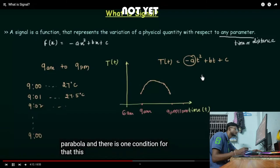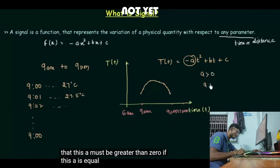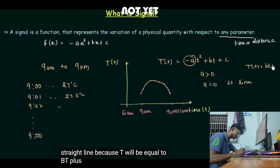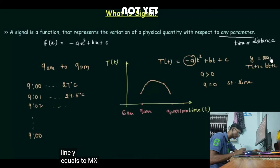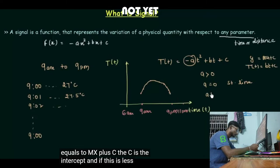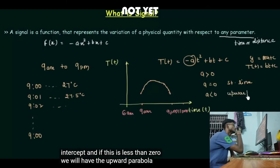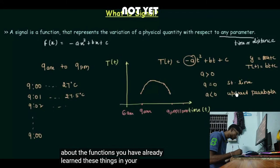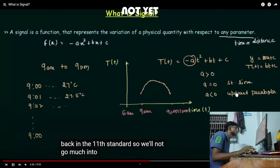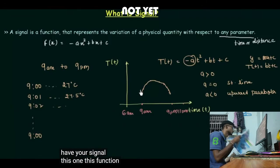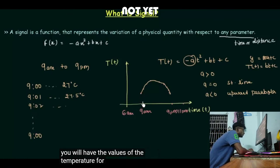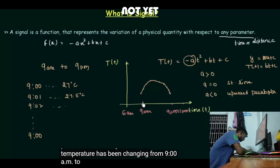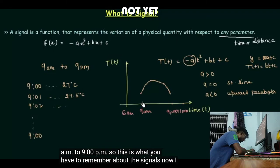For a downward parabola, a must be greater than zero. If a equals zero, we get a straight line T = bt + c — the classic equation y = mx + c. If a is less than zero we get an upward parabola. This is a brief review of functions from your eleventh-standard mathematics. This function is your signal — it shows how the temperature changed from 9 a.m. to 9 p.m.